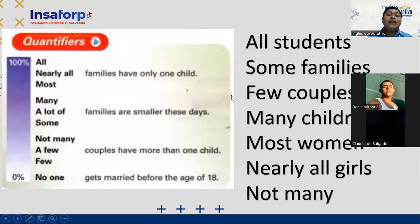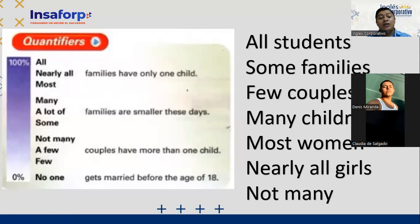So we were talking about these quantifiers: all, nearly, almost — meaning a lot of — some, not many, a few, and also no one.